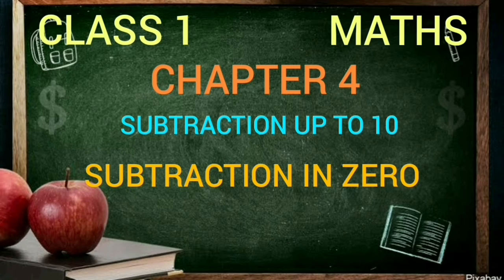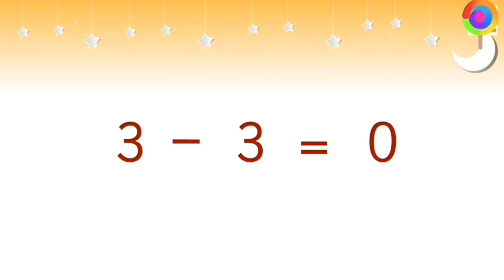If we subtract same numbers, we will get the answer as zero. Otherwise, if we subtract zero from any number, the answer will be the same number.